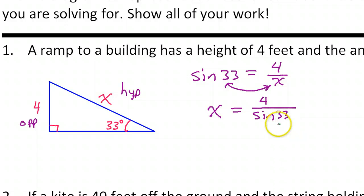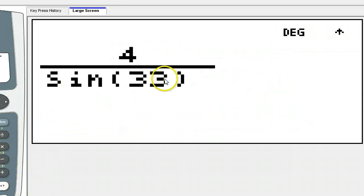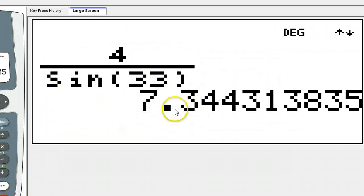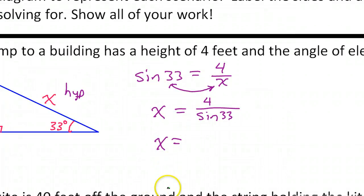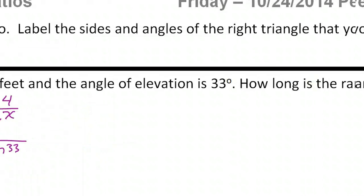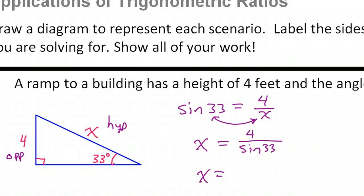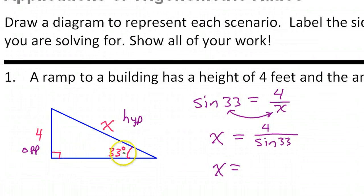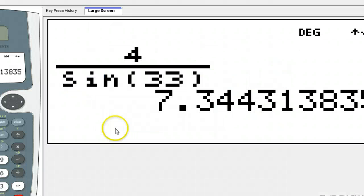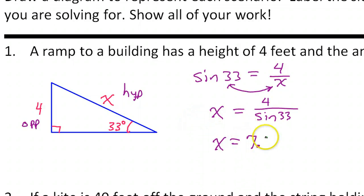I would just put this into the calculator and that's going to give you the length of the ramp. In your calculator it would look like that. We get 7.3 — it didn't say how many decimal places, so let's do one decimal place. So that's 7.3 feet, and that is how long that ramp is.